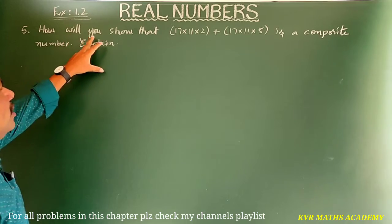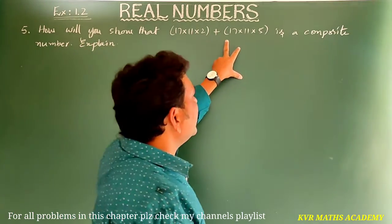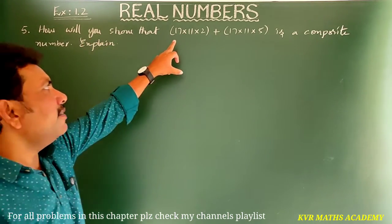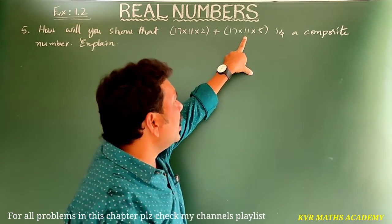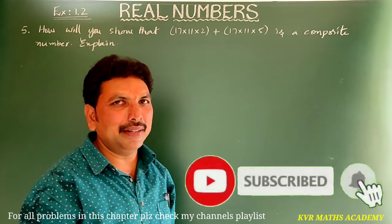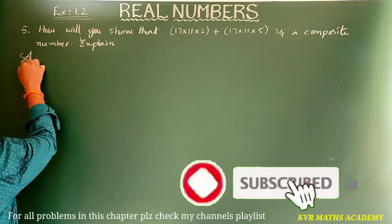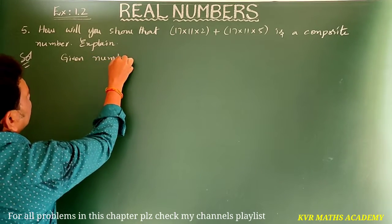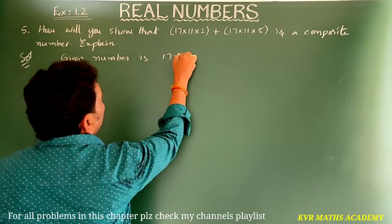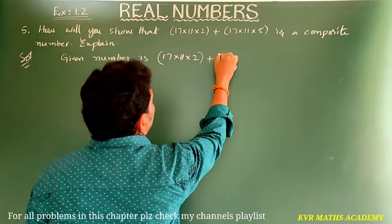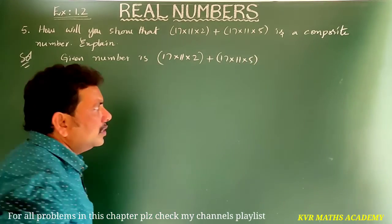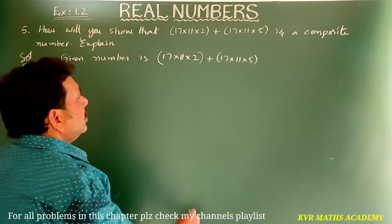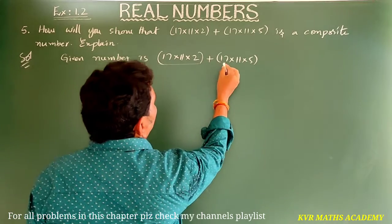Next, the fifth question: how will you show that 17 into 11 into 2 plus 17 into 11 into 5 is a composite number? Solution: the given number is 17 into 11 into 2 plus 17 into 11 into 5. In both terms, 17 into 11 is common.